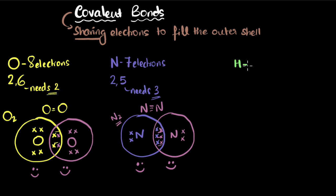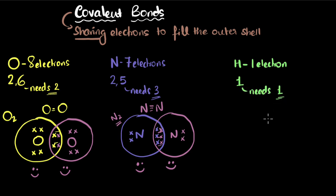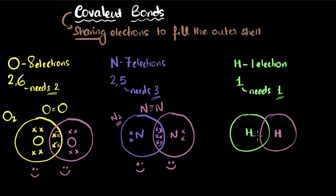Let's do one more example: hydrogen, which has an atomic number of one. Can you write down the dot structure for its covalent bond? Since atomic number one means it has one electron, its electronic configuration is just one. That means the first shell itself is its outer shell, and the first shell can accommodate two electrons — so hydrogen needs one more. If it needs one, it's going to share its one electron with another hydrogen. We draw two hydrogen atoms and each shares its one electron. Now both hydrogen atoms have two electrons, so they are both happy.